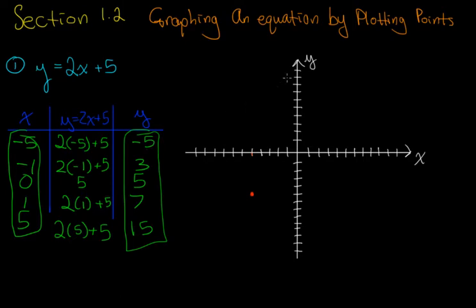And then at negative 1, we have 3. At 0, we have 5. And at 1, we have 7. At 5, we have 15, so it's way up there. I'm not going to do that. And it should look something like that. The graph of y equals 2x plus 5 should look something like that.